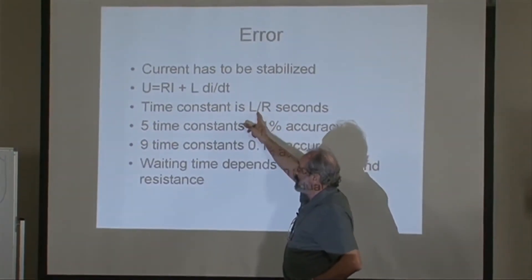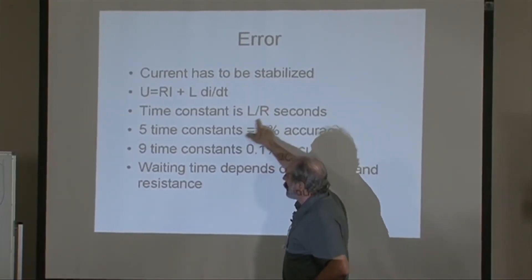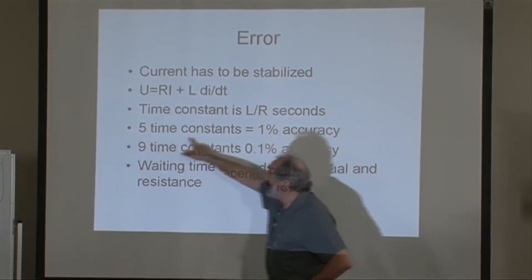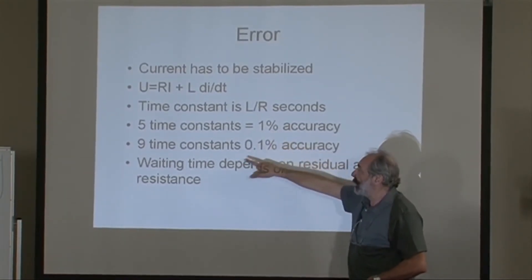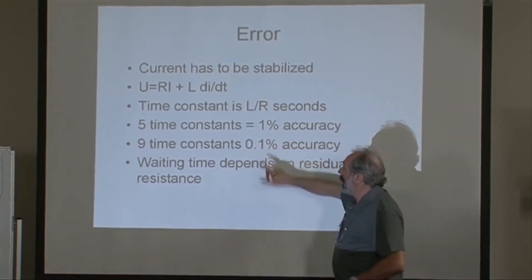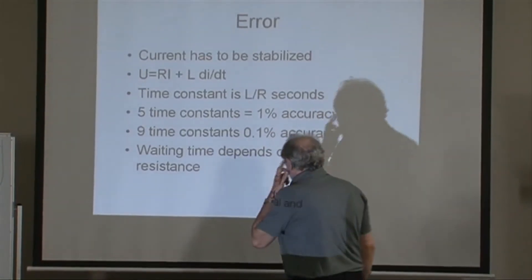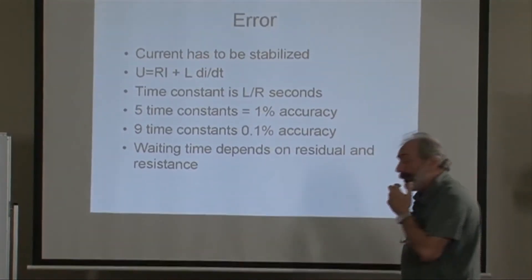But the important thing is that if this is my time constant, if I wait five time constants, I get one percent accuracy. If I wait nine time constants, it is zero point one percent accuracy.